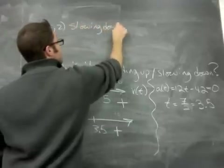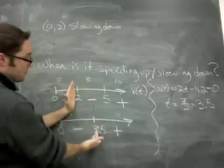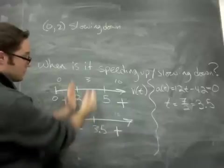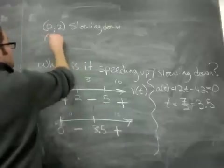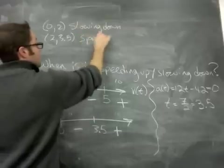And what's the next little mini micro interval? From 2 to 3.5, it's minus, minus. 2 to 3.5. So that means they're speeding up, because the signs match.